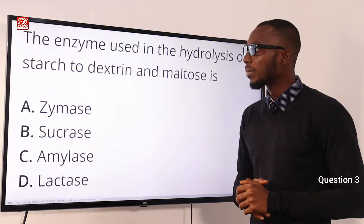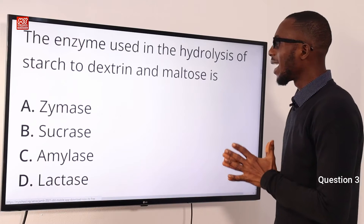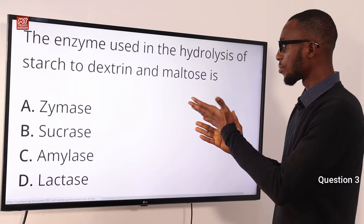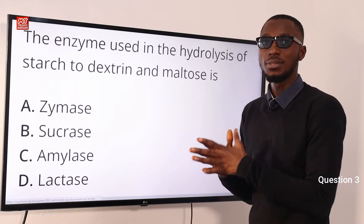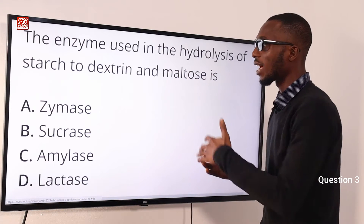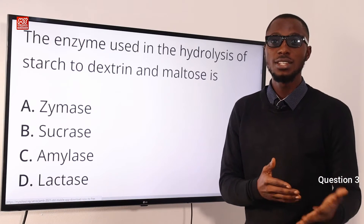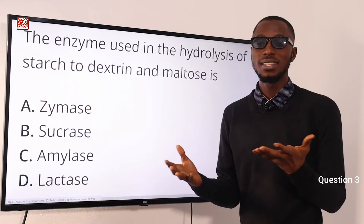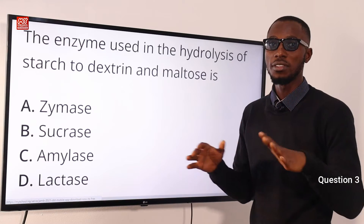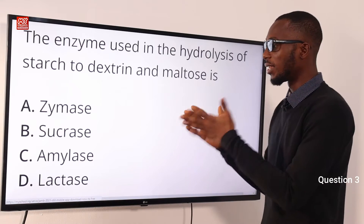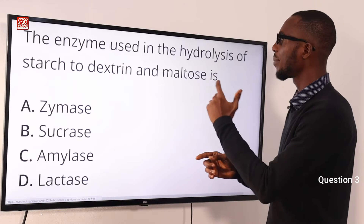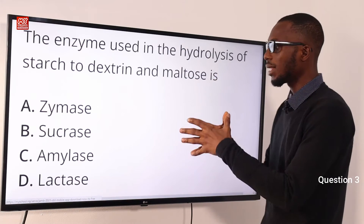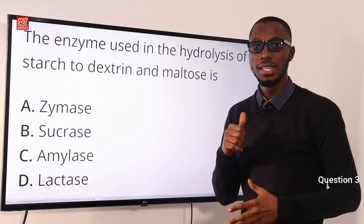Question 3. The enzyme used in the hydrolysis of starch to give you dextrin and maltose is what? In the hydrolysis of starch, you can use dilute acid or you can use an enzyme — the enzyme amylase. This enzyme is present in our saliva or is found in malts. So the correct option is option C. The enzyme used in the hydrolysis of starch to give you dextrin and maltose is amylase, option C.